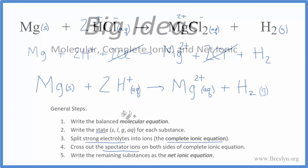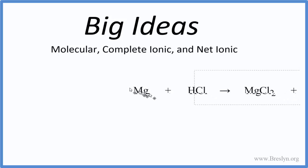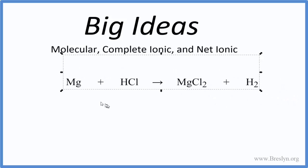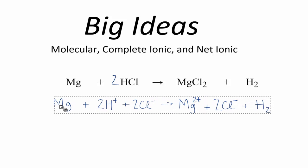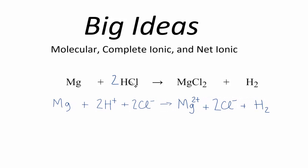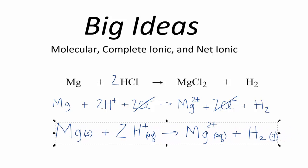The big ideas here: start with the molecular equation where strong electrolytes are not broken into ions, and balance it first. Then write the complete ionic equation by splitting strong electrolytes into their ions, accounting for coefficients and subscripts. Finally, cross out the ions that are the same on both sides — the spectator ions — and that gives the net ionic equation.